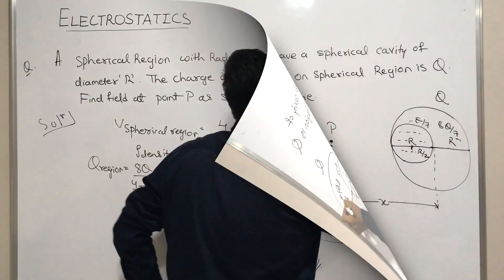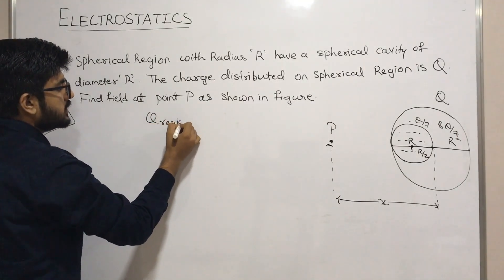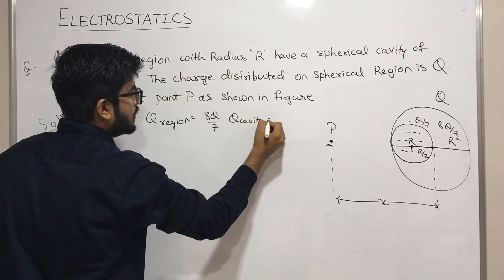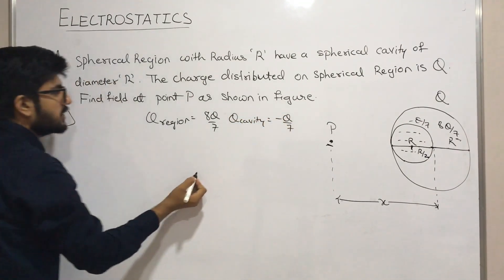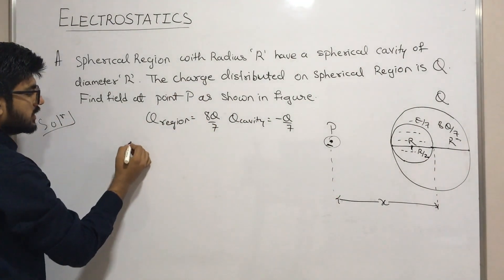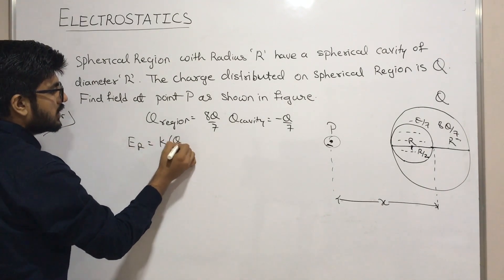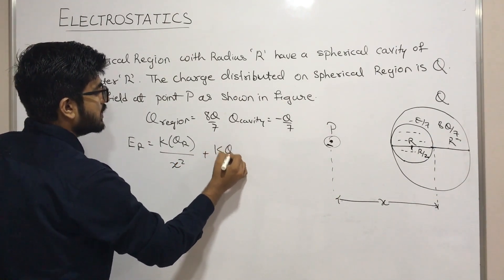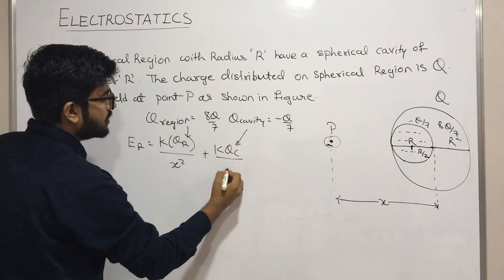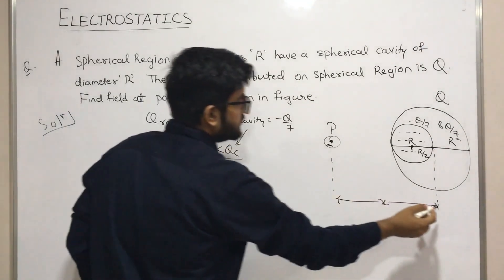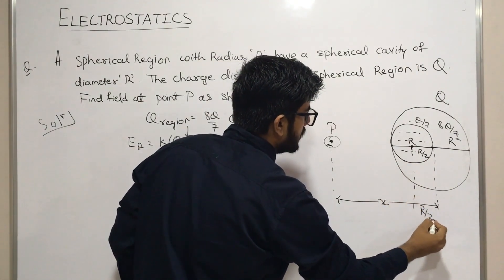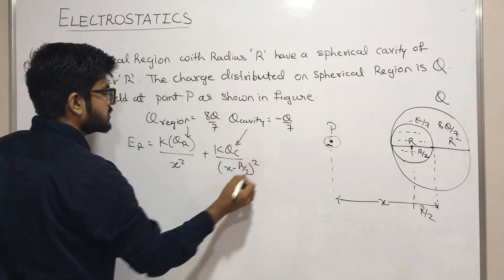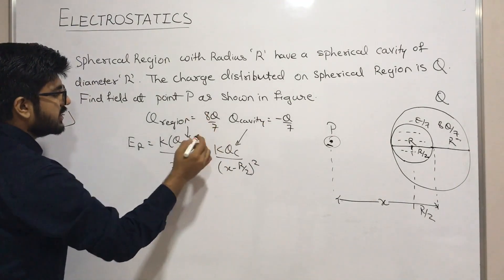So the charge in the remaining region is q_region = 8q/7 and the cavity charge is q_cavity = minus q/7. Now to find the electric field at point p: E = k·q_region/x² + k·q_cavity/(x − r/2)², where x is the distance from the center and the cavity center is at r/2.